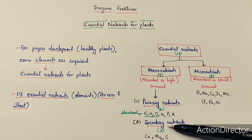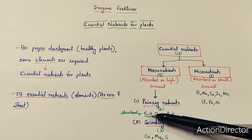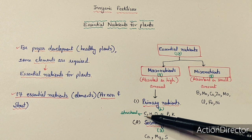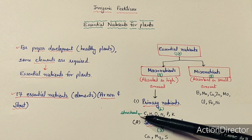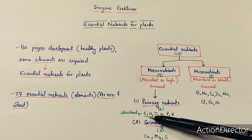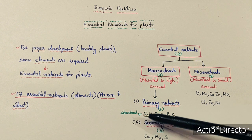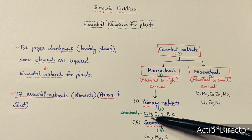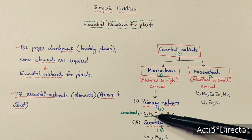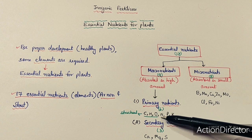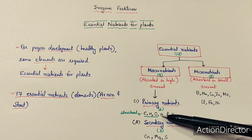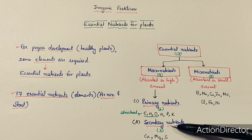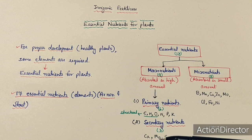Macronutrients can be further divided into primary nutrients and secondary nutrients. There are six primary nutrients. Three of them — C, H, O — are the basic elements that form the structural units of any plant material, including carbohydrates, proteins, and fats. The other three primary nutrients are nitrogen (N), phosphorus (P), and potassium (K). The three secondary nutrients are calcium, magnesium, and sulfur.